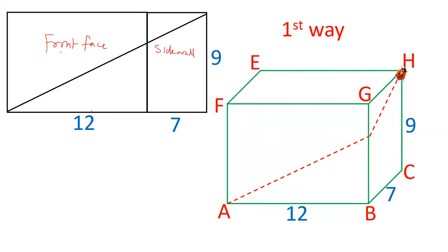Front face is 12 by 9. Side wall is 7 by 9. So this length is hypotenuse of this right angle triangle. Let's calculate the length. H² = P² + B². Perpendicular is 9. Base is 12 plus 7, 19.